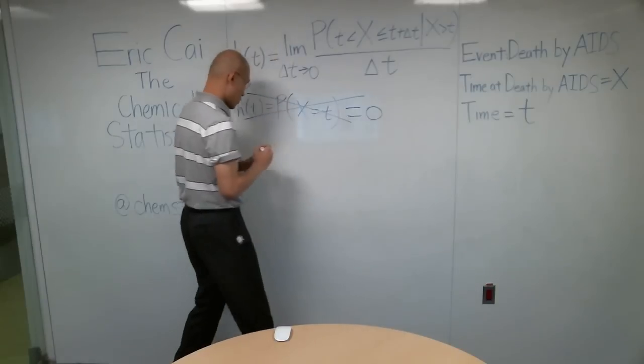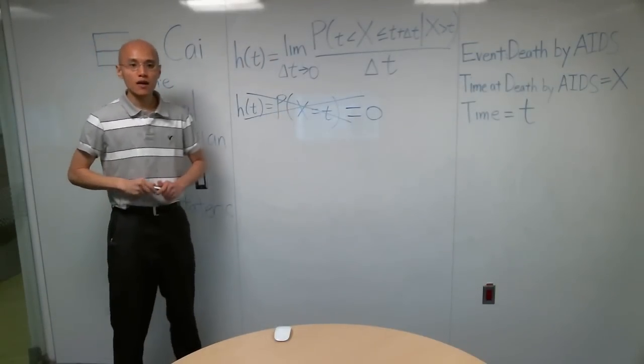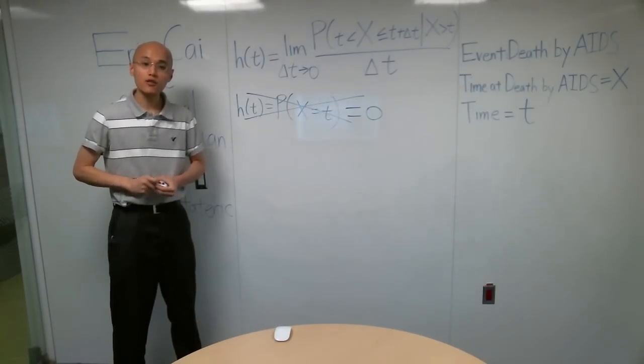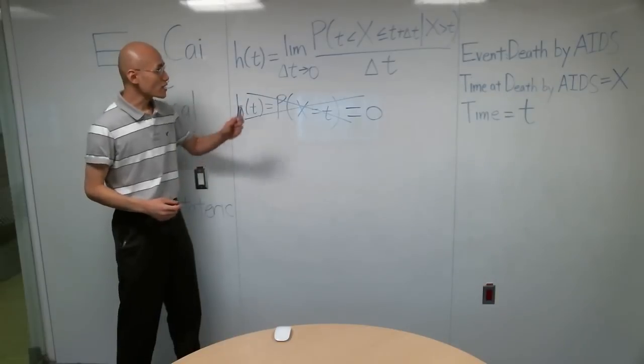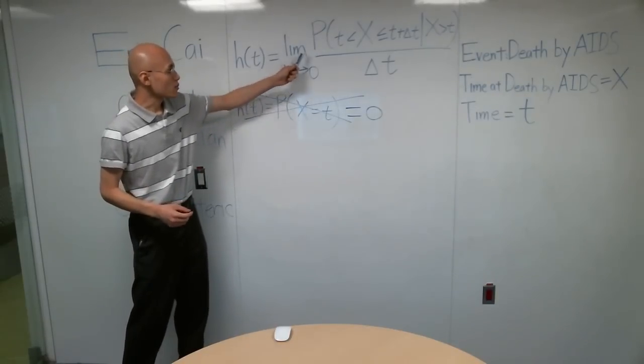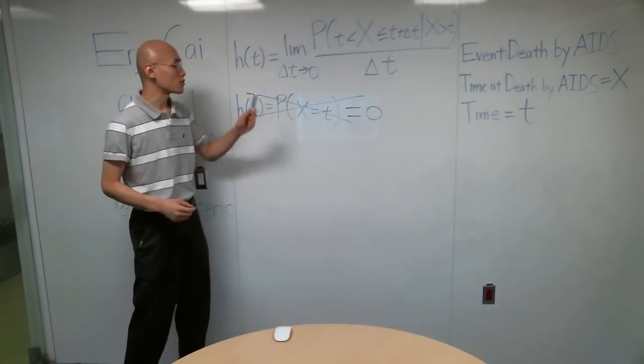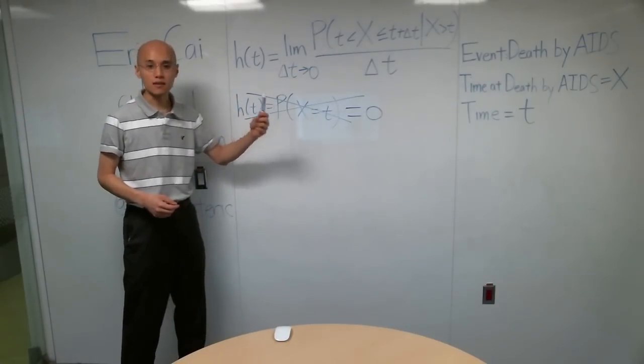Instead, we can talk about the probability of an event happening in a particular interval of time. That's why we're defining this probability of X being in some interval between T and some later time, T plus delta T.